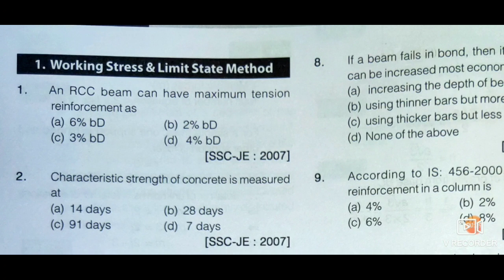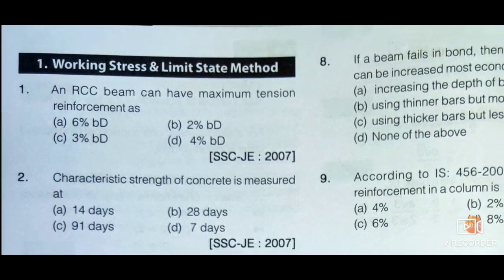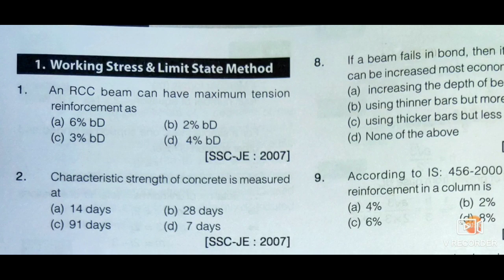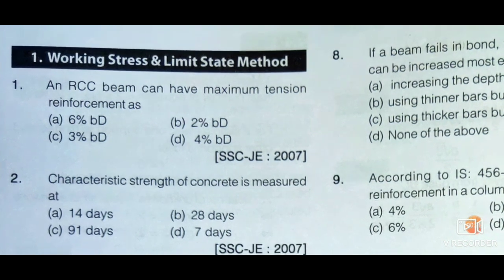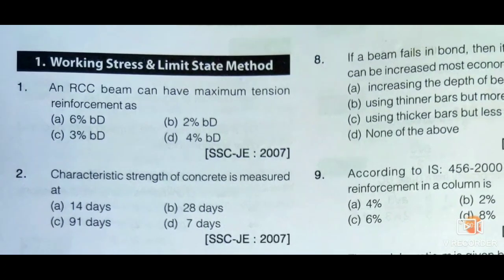First question: An RCC beam can have maximum tension reinforcement as — option A: 6% bd, option B: 2% bd, option C: 3% bd, and option D: 4% bd. Here, b indicates breadth of the RCC beam section and capital D indicates depth of the RCC beam. The maximum tension reinforcement is 4% of breadth into depth, so option D is the correct answer.